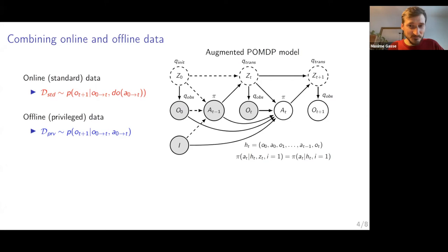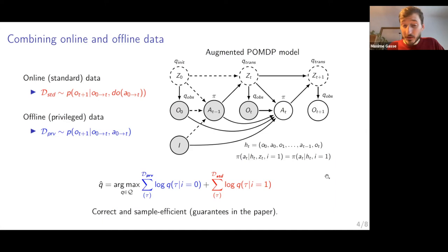And this is your learning problem. It's very simple, standard likelihood maximization. So we fit this model. The samples that come from the privileged regime, we fit them conditioned on i equals 0. Samples that come from the standard regime, we fit them with i equals 1. So why would that work? As you can see, if you just discard the privileged data, you make the dataset empty. And it goes back to doing model-based RL using only the online data. And this is correct. This is causally correct. If you only use online data, you will learn a causal model. But maybe you don't have a lot of data.